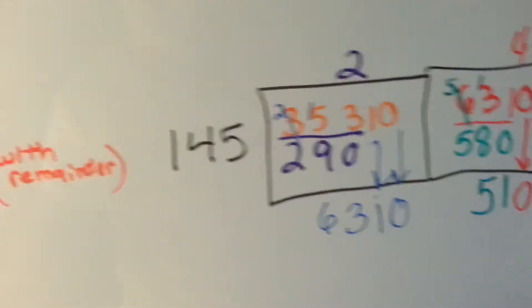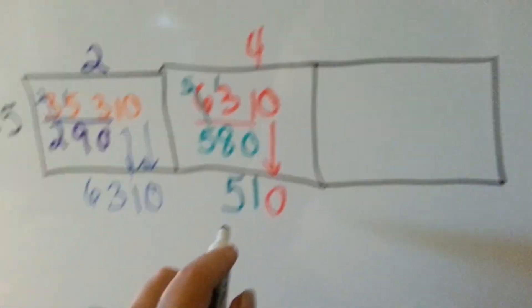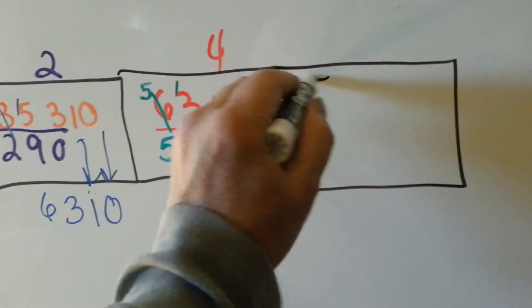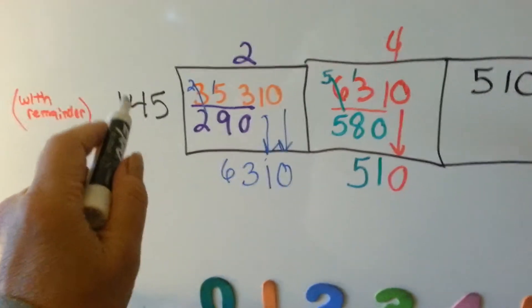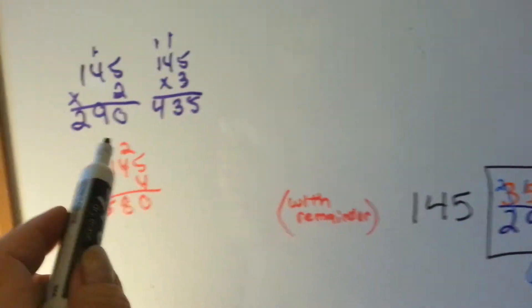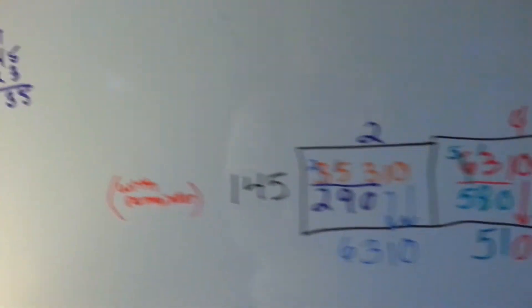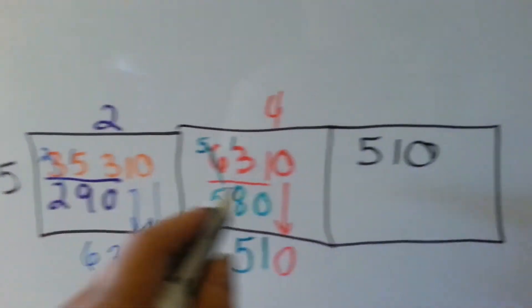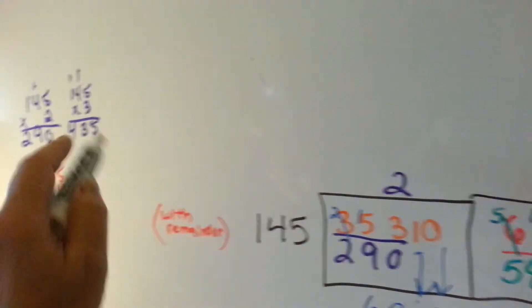So, now we need to make another box. And the 510 goes into that box. And we say, how many times can 145 go into 510? Well, we've got our math here from before. So, 510 looks like we're going to have to go with 3. So, 145 goes into 510 three times, and it is 435.